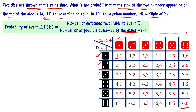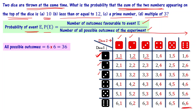First of all, the probability definition: probability of an event E is defined as P(E) equal to the number of outcomes favorable to event E divided by the number of all possible outcomes of the experiment. From (1,1) to (6,6), the total number of all possible outcomes is 6 times 6, that is 36.